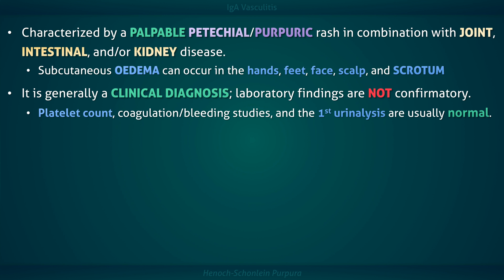If the urinalysis is abnormal, then serum creatinine and electrolyte levels should be ordered. The stool should be tested for occult blood, and for patients with intense abdominal pain, ultrasound imaging is indicated to assess for the possibility of intussusception.